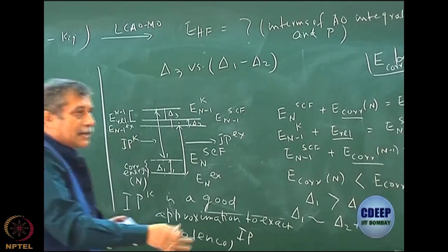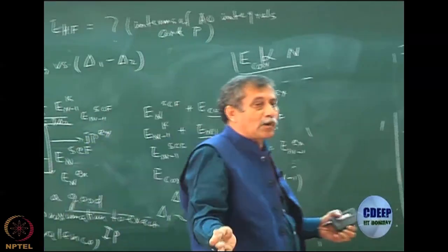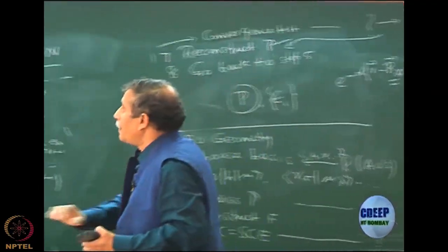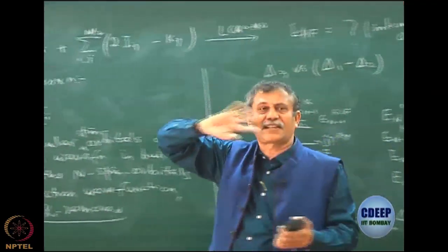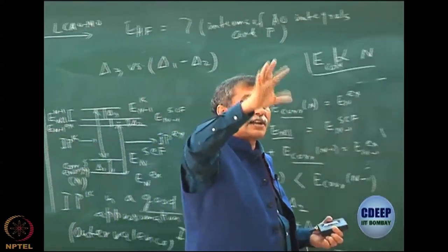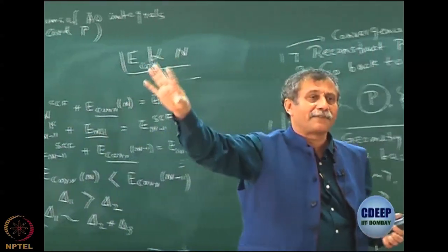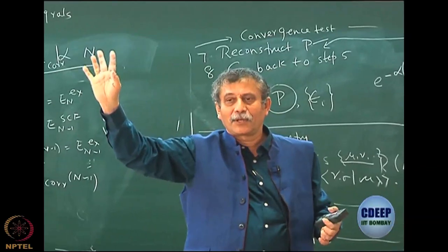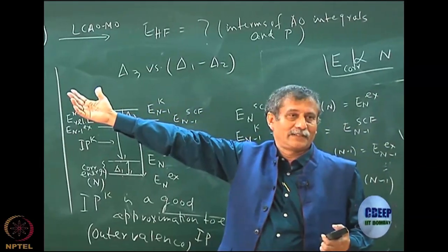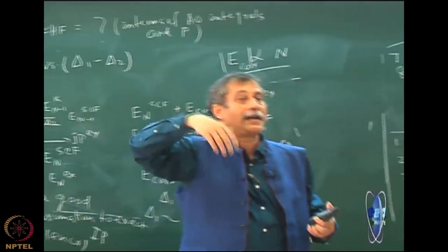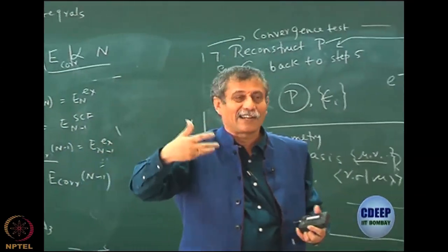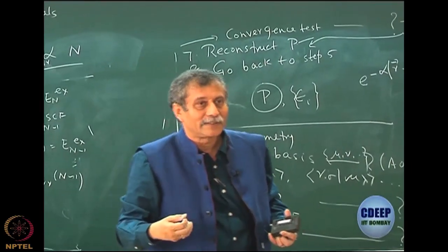If you take out inner valence, the balance is already destroyed. If you take out a core electron, there is no point, because relaxation is much larger than the correlation effect - the correlation becomes unimportant. Then you should do what is called delta SCF: just take the SCF energy difference and you will get pretty good results, because the whole effect is coming from the relaxation. You have to understand the physics and respond accordingly.